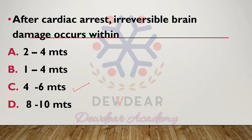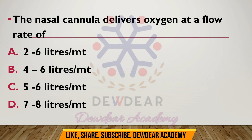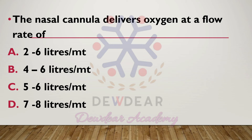The nasal cannula delivers oxygen at a flow rate of: options two to six liters per minute, four to six liters per minute, five to six liters per minute, seven to eight liters per minute. The correct answer is option A — two to six liters per minute.